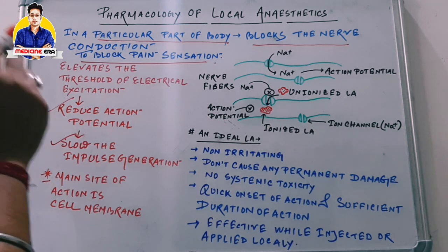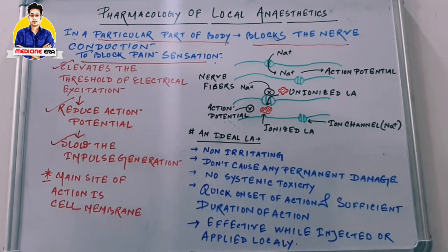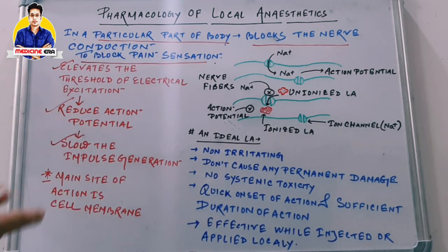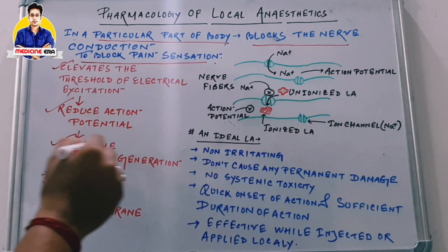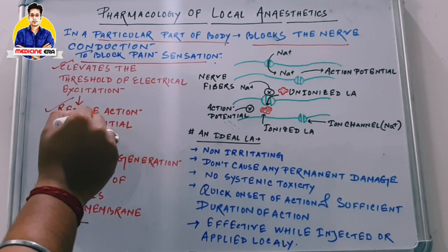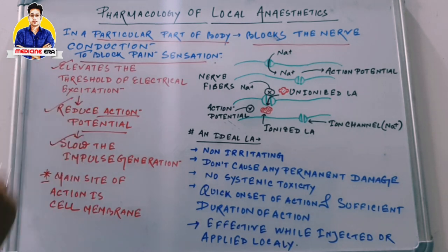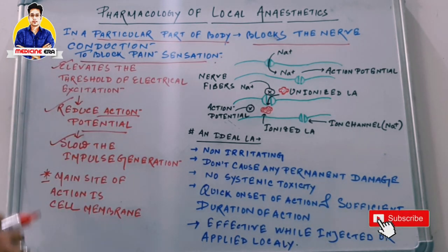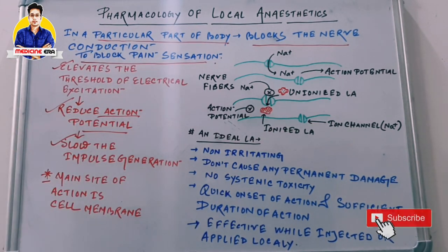In terms of the mechanism of local anesthetics, they elevate the threshold of electrical excitation. When the threshold of electrical excitation is increased, it reduces the generation of action potential. Without action potential generation, nerve impulse cannot be propagated. So local anesthetics elevate the threshold, reduce action potential generation, slow down impulse generation, and thereby block nerve impulse conduction — resulting in no pain sensation.